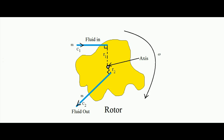The same mass of fluid exits the rotor at a distance r2 from the axis with velocity c2, also in the tangential direction. Due to this interaction, the rotor rotates with angular velocity omega. This process is assumed to happen per unit time — one second.